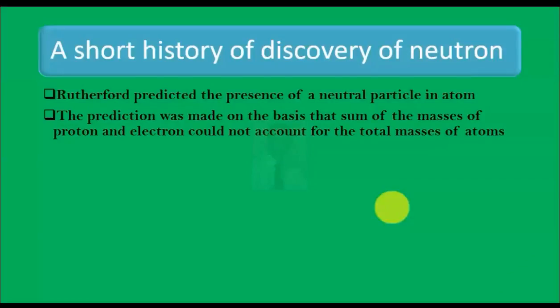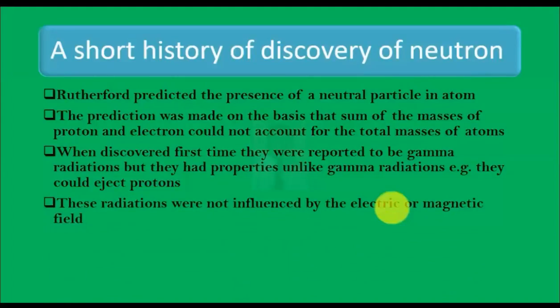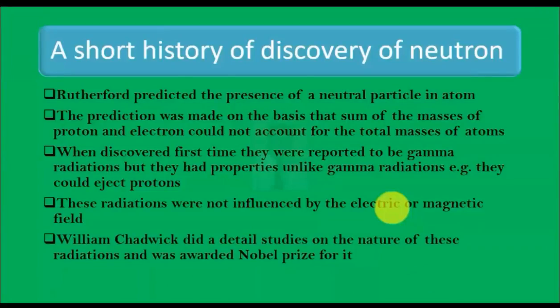When discovered first time they were reported to be gamma radiations, but they had properties unlike gamma radiations. They could eject protons. These radiations were not influenced by electric or magnetic field. William Chadwick did detailed studies on the nature of these radiations and was awarded Nobel Prize.